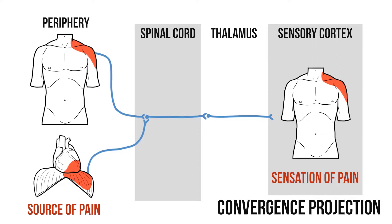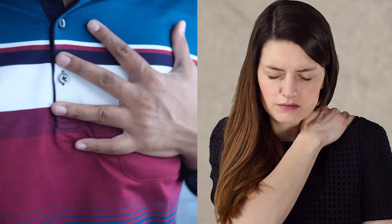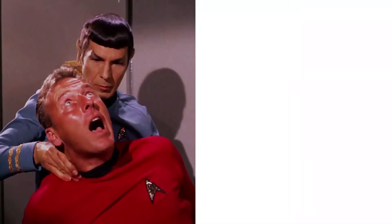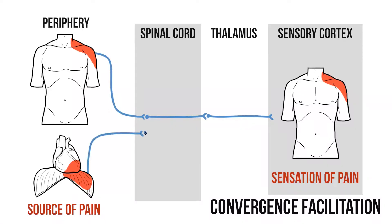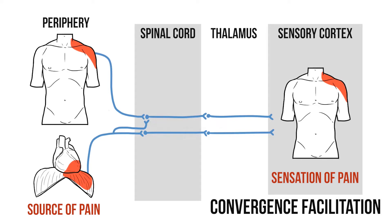Convergent projection is a great way to explain how the brain confuses pain signals from different locations. However, it doesn't necessarily explain an important feature of referred pain: pain always refers from autonomic to somatic, never the other way round. For example, pain in the heart can refer to the left neck and shoulder, but an injury to the neck is never experienced as pain in the heart. Convergent facilitation proposes that both regions have largely separate neural pathways, but that a connection exists between them. Ordinarily, this connecting neuron has a higher threshold than the main pathway, so signals don't travel along it. However, repeated stimulation of these fibres increases their sensitivity, allowing signals to pass from autonomic to somatic. This model also explains why there can be a delay before the onset of referred pain.